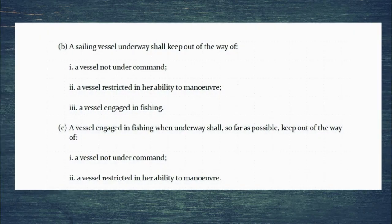Paragraphs B and C go on to clarify this. Sailing vessels need to keep out of the way of not under command, restricted in ability to manoeuvre, and fishing vessels. Paragraph C says fishing vessels keep out of the way of not under command and restricted in ability to manoeuvre.